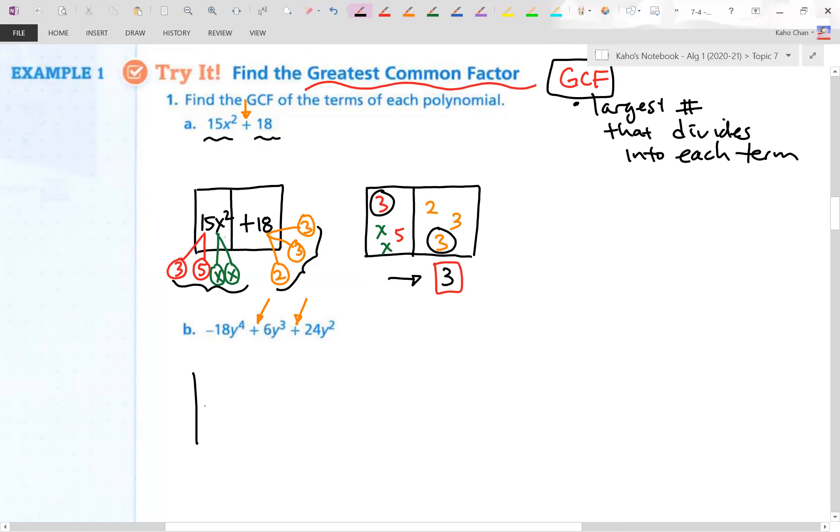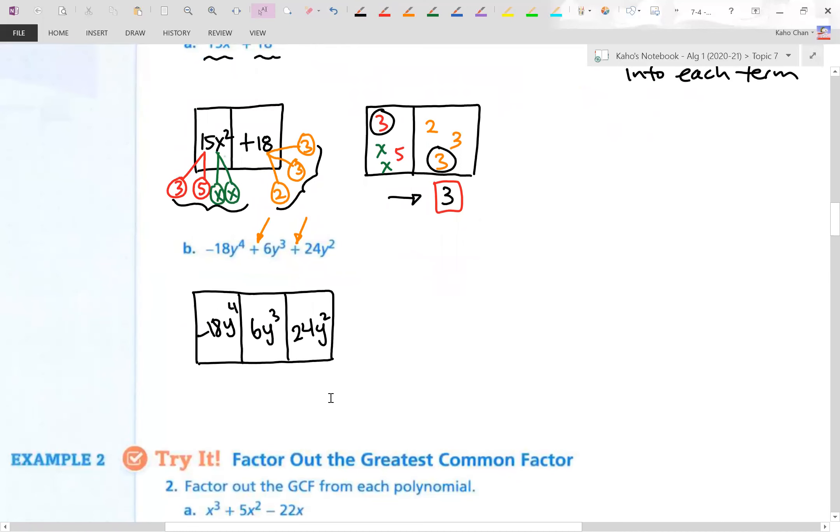1b. We have a trinomial. Now, after a while, you don't have to do all this stuff that I'm doing right now. You can do some of it mentally in your head. As we do more of these problems, they get a little more sophisticated, right? So negative 18, 6, and 24. Let's break them all down. We have a little time. So we'll do the coefficients first. Negative 18 is negative 1 and 18. 18 is 2 and 9. 9 is 3 and 3. We have y to the fourth. We'll just call it y, y, y, y.